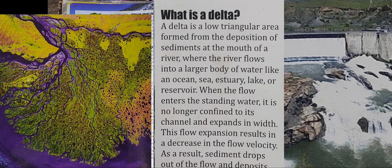What is a Delta? A delta is a triangular area formed from the deposition of sediments at the mouth of a river, when the river flows into a larger body of water such as an ocean, sea, estuary, or lake.